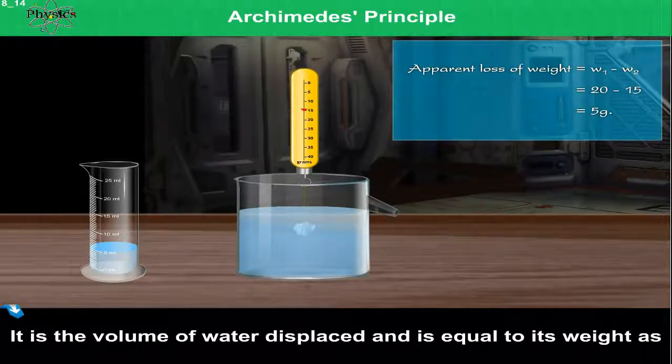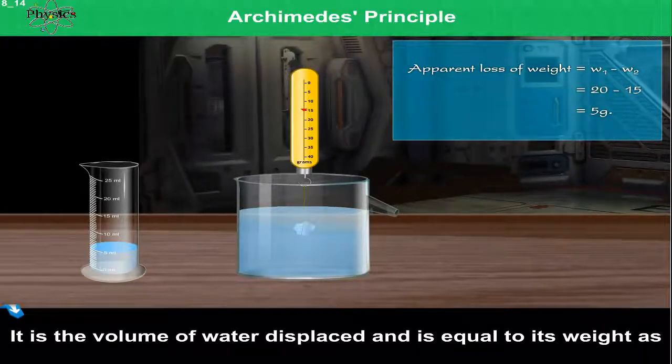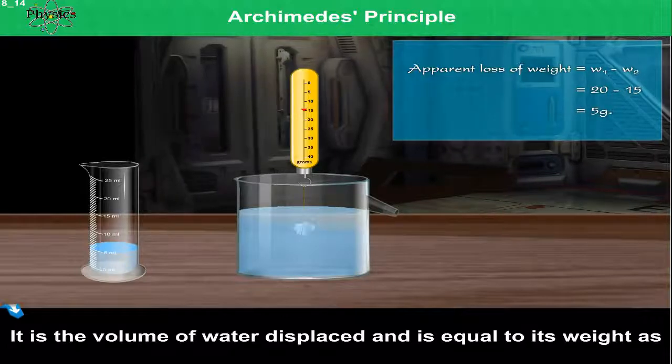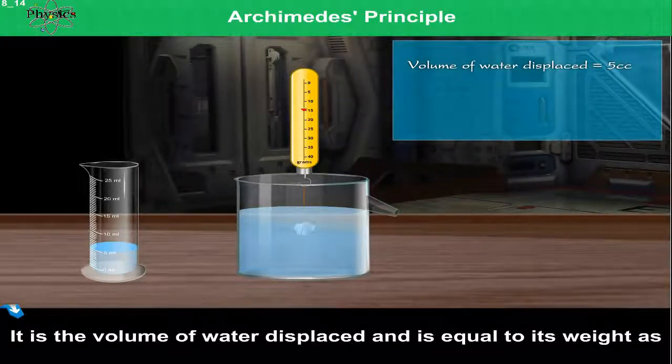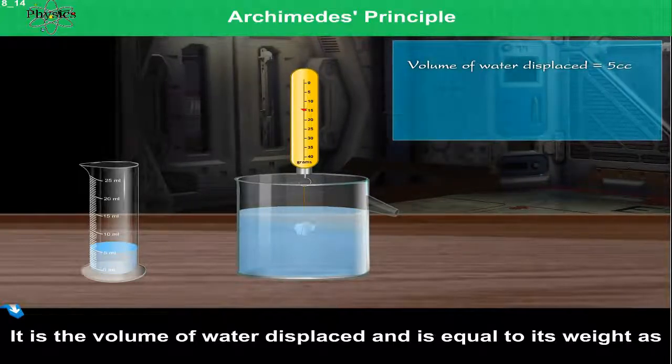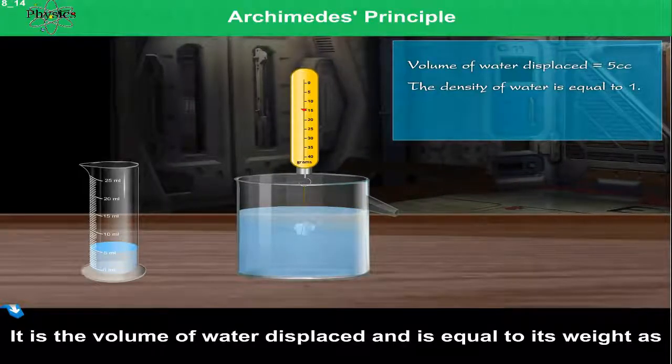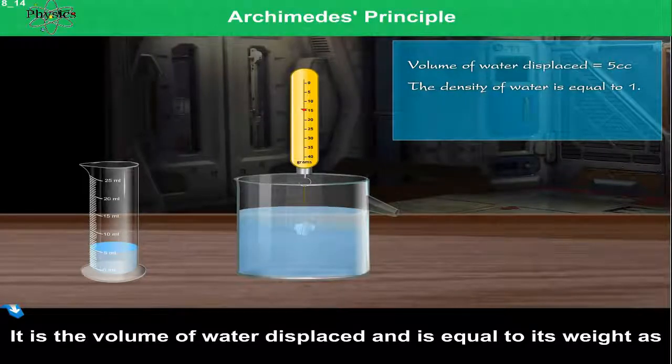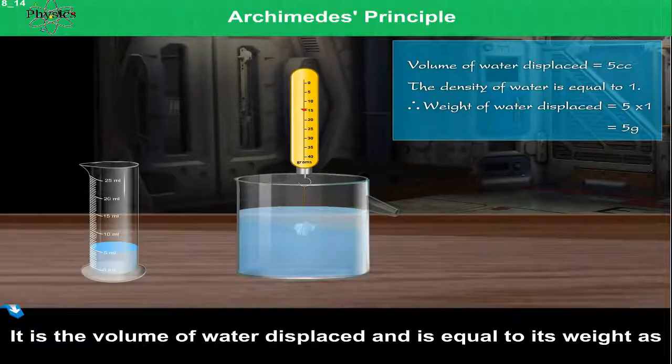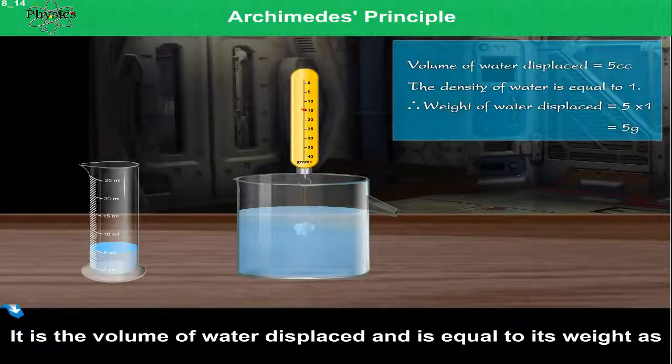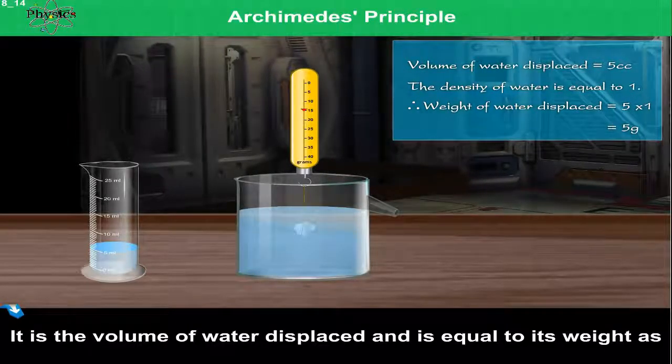It is the volume of water displaced and is equal to its weight. Volume of water displaced is equal to 5 cc. The density of water is equal to 1. Therefore, weight of water displaced is equal to 5 times 1, which equals 5 grams.